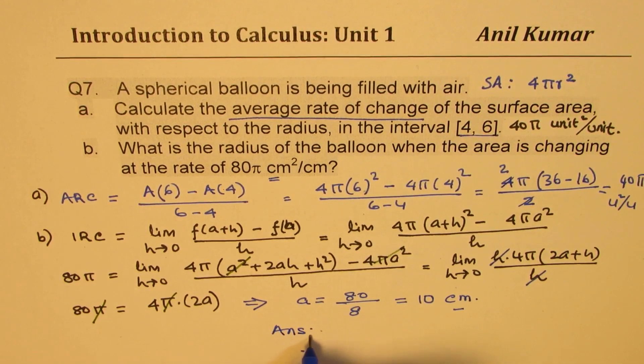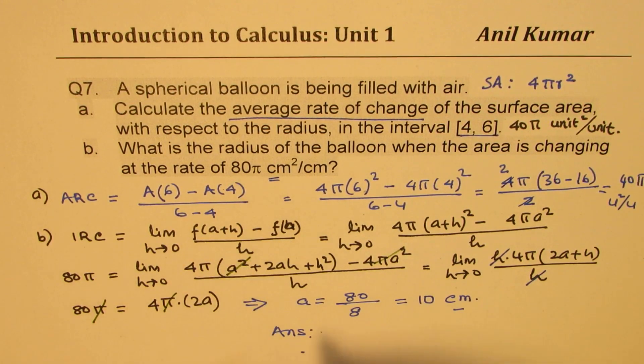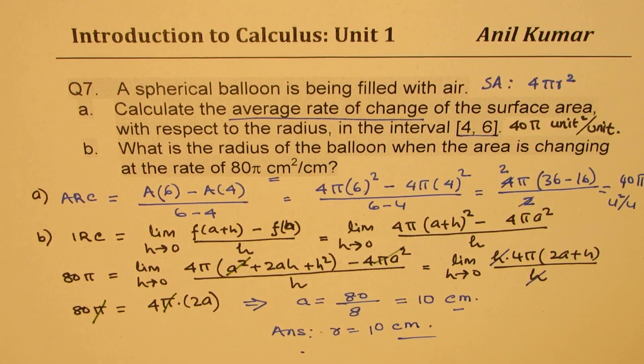So our answer here is that the radius of the balloon when the area is changing at the rate of 80π cm² is 10 centimeters. Is that clear? So that is how you should be solving it.